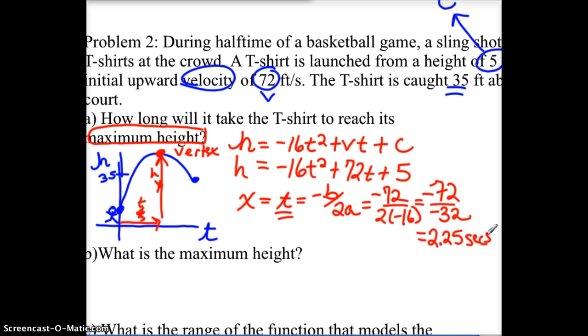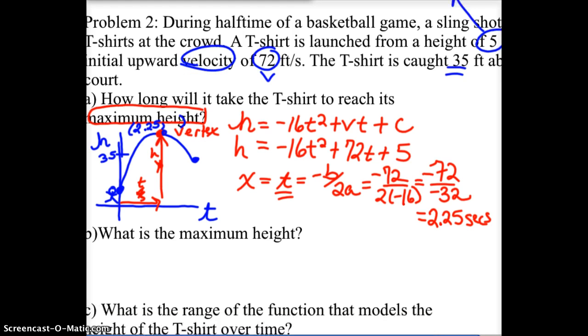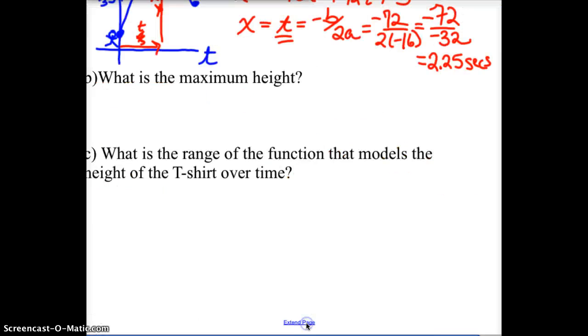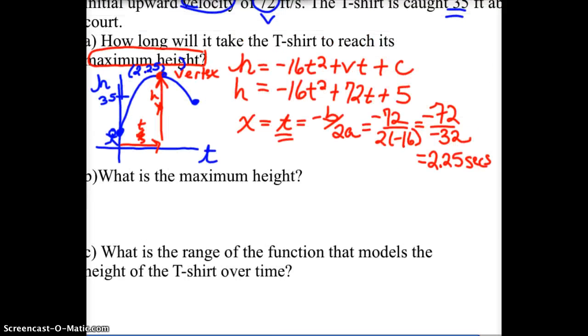What does that mean? It means that after the shirt gets launched, it reaches its maximum height up here at this point at 2.25 seconds. It's the X coordinate of the vertex. Well, the next question says, what is the maximum height? Well, really, I'm asking you, just like we did on those last problems, what's the Y value at the vertex? I know it maxes out 2.25 seconds in, but how high does it get?